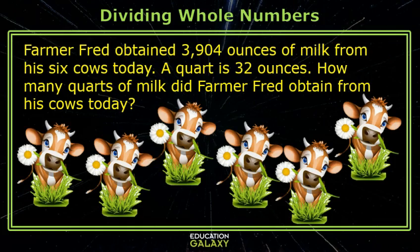Farmer Fred obtained 3,904 ounces of milk from his six cows today. A quart is 32 ounces. How many quarts of milk did Farmer Fred obtain from his cows today?